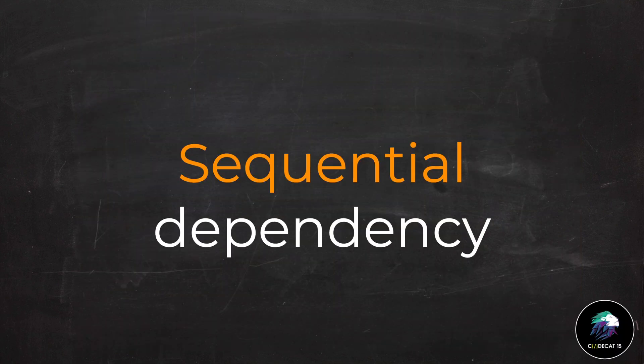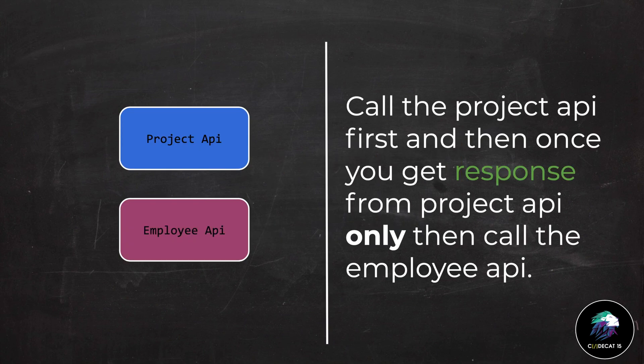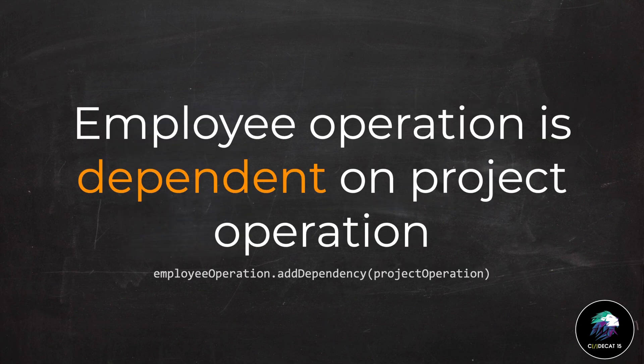First of all, we will talk about sequential dependency. I have two APIs — one is project and the other is employee. The requirement is that first, the project API should be called, and then the employee API should be called. So basically, we have to follow a sequence — employee operation is dependent on project operation.